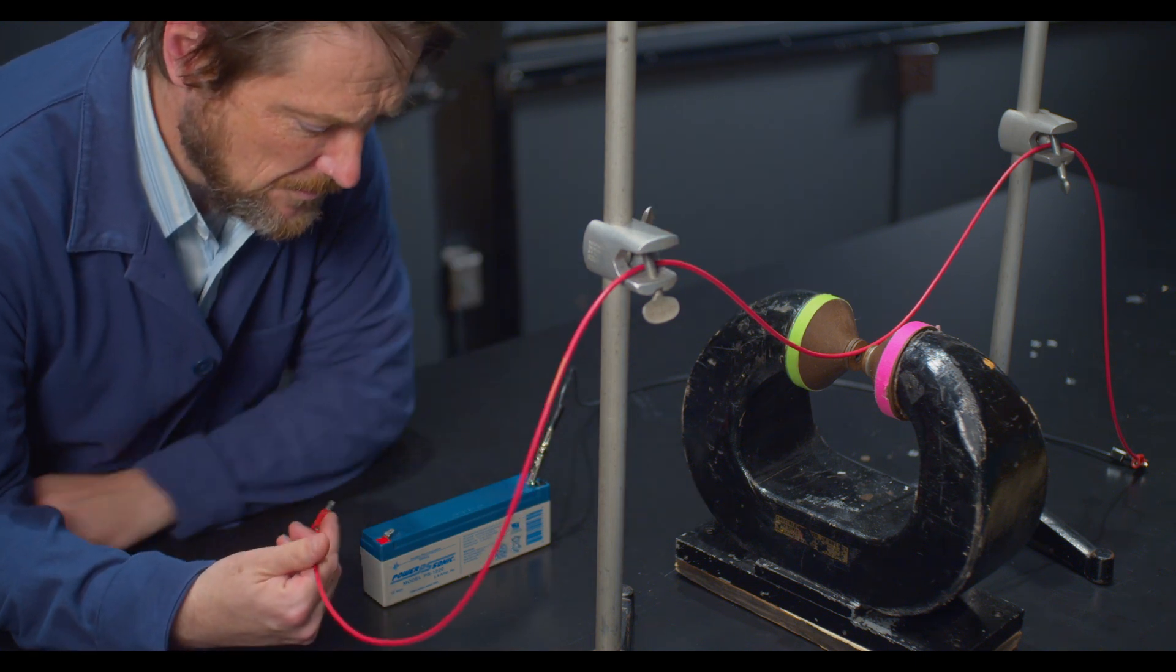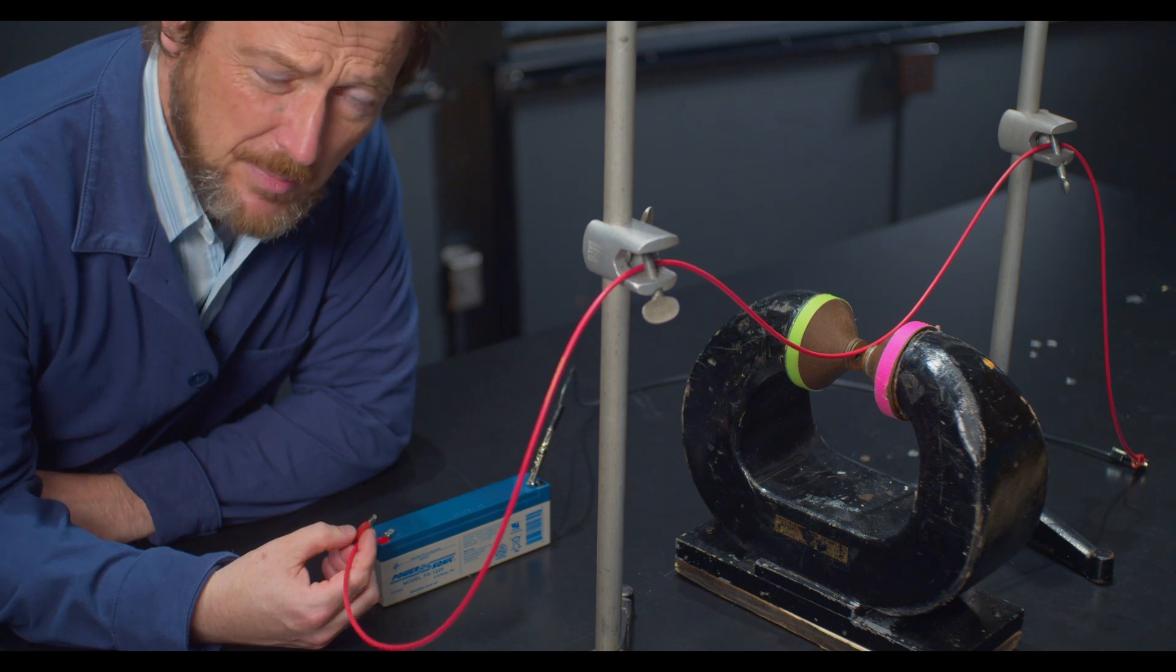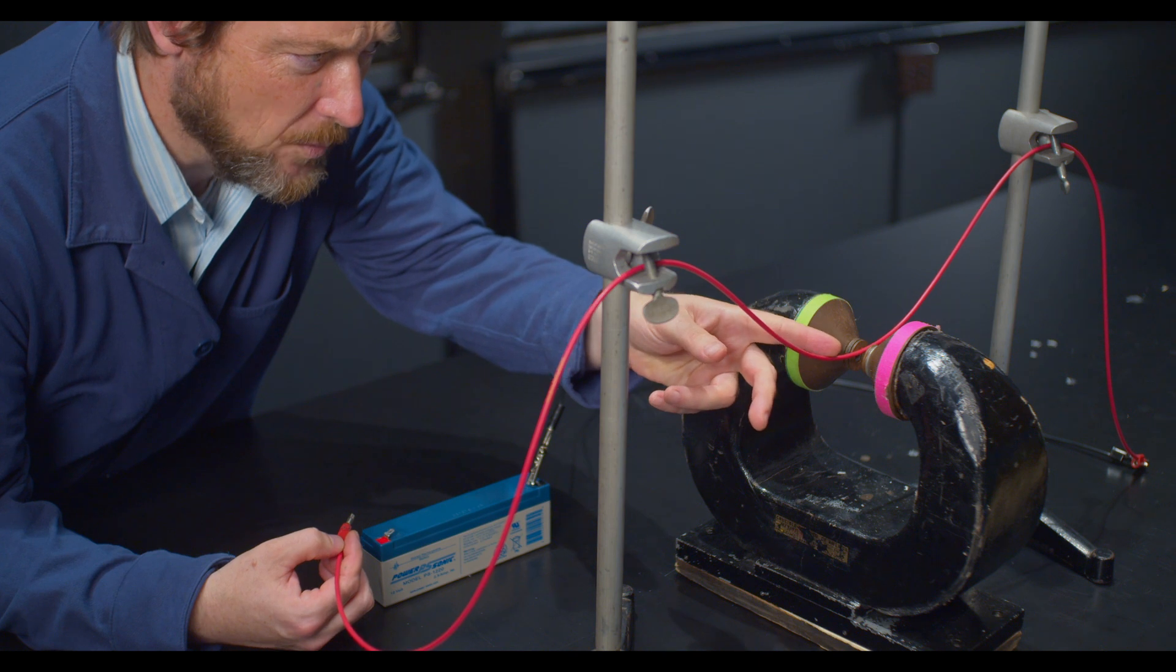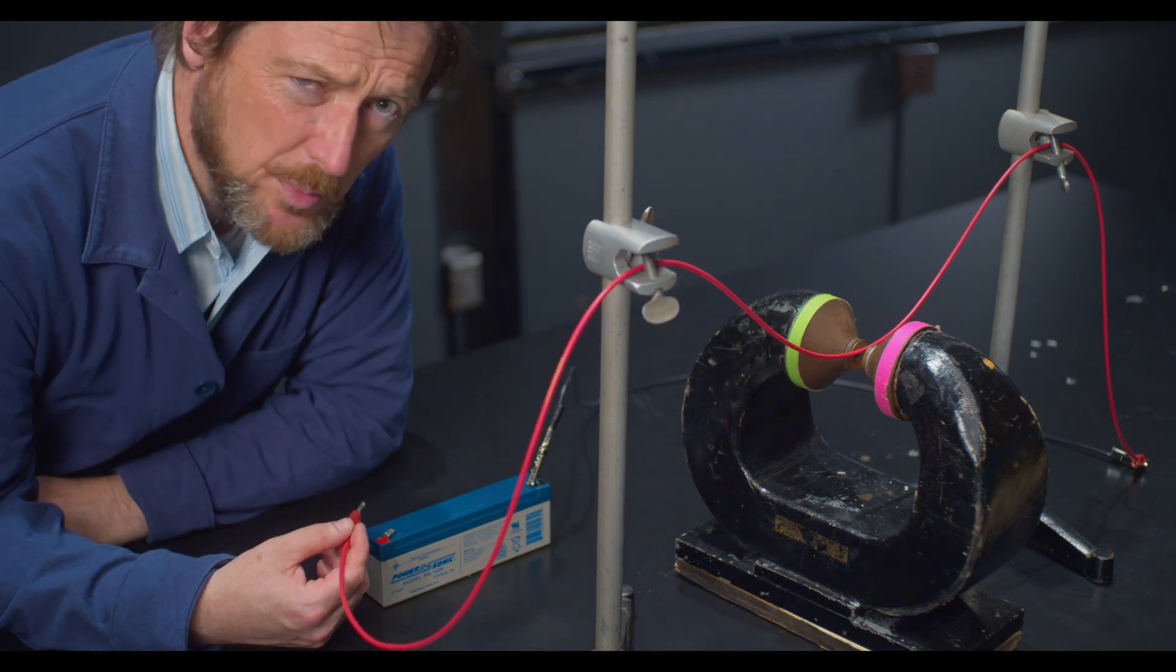So I'm going to briefly make a connection with the battery that will send current through the wire. The wire goes between the two poles of the magnet.